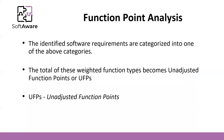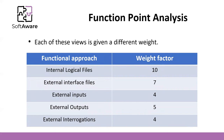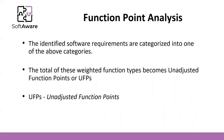We identify the software requirements and categorize them into one of these categories — internal logical files, external interface files, external inputs, external outputs, and external interrogations — which gives us the idea of the dimension of the project. From this, using the weight factors, we calculate the UFPs, the unadjusted function points.